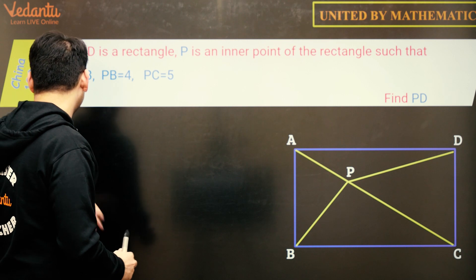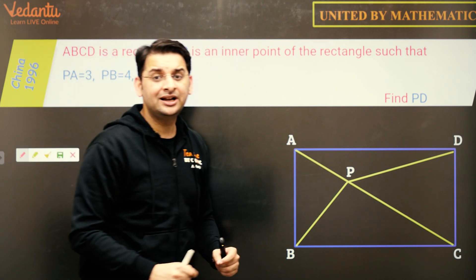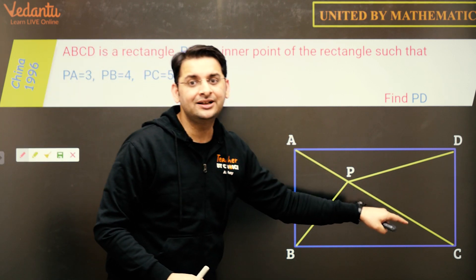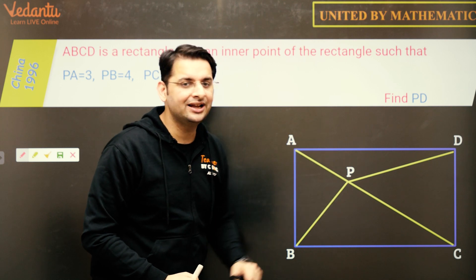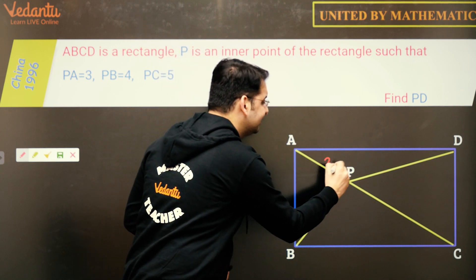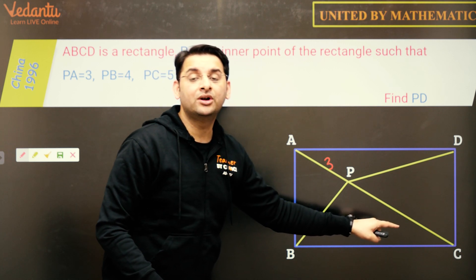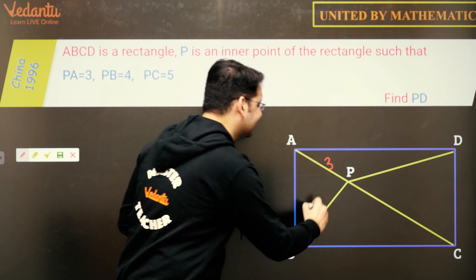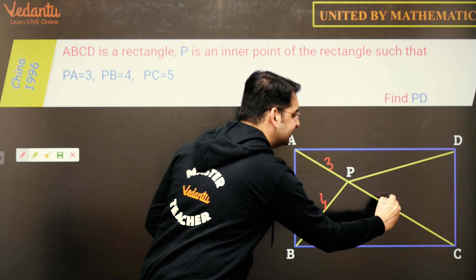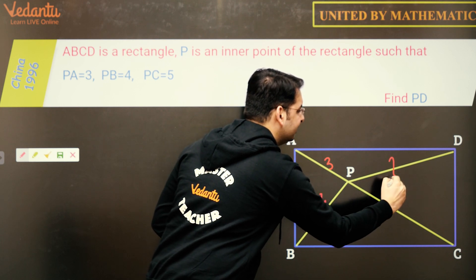So let us see what the question is. There is a point inside the rectangle, it may or may not be on the diagonal, it is any point inside the rectangle such that distance of this point from the 3 corners is given to us. So PA is 3 in this case, PB is 4 and PC is 5 and you need to find PD.